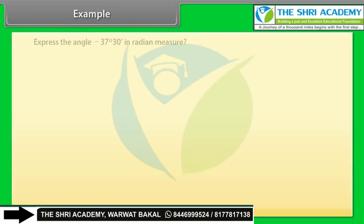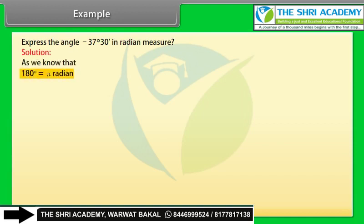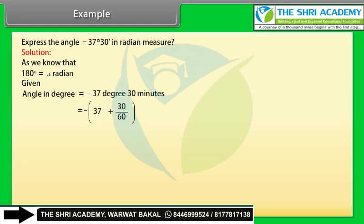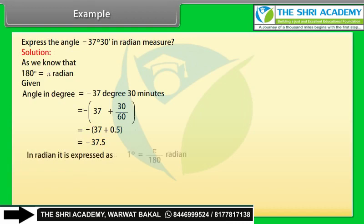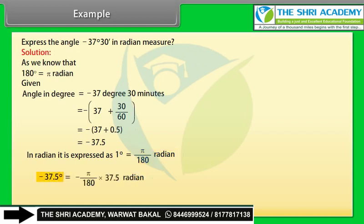Example: Express the angle −37 degrees 30 minutes in radian measure. Solution: Since 180 degrees equals π radians, the given angle −37°30' equals −(37 + 30/60) = −(37 + 0.5) = −37.5 degrees. Since 1 degree equals π/180 radians, −37.5 degrees equals −(π/180) × 37.5 = −π/24 radians.